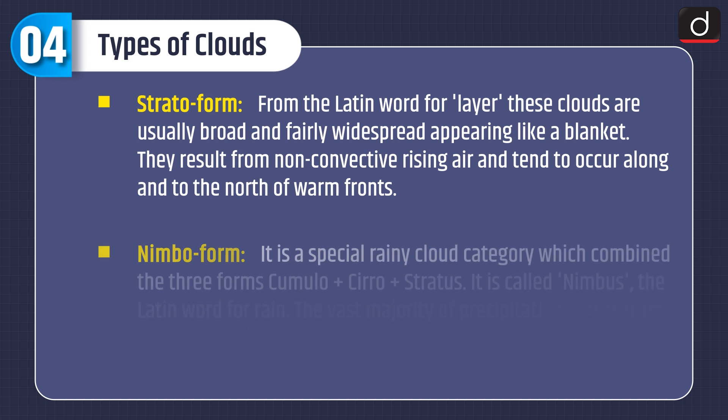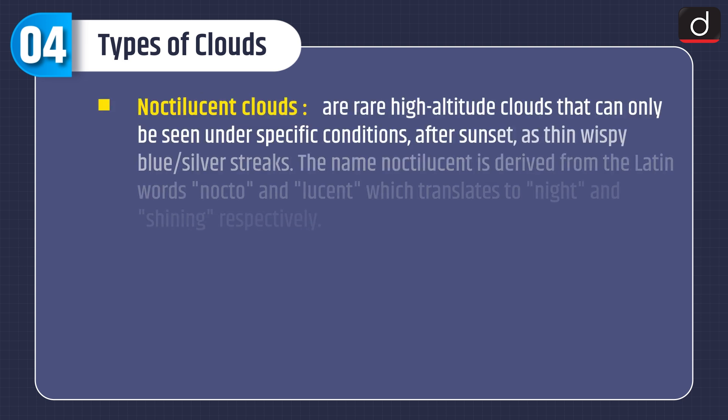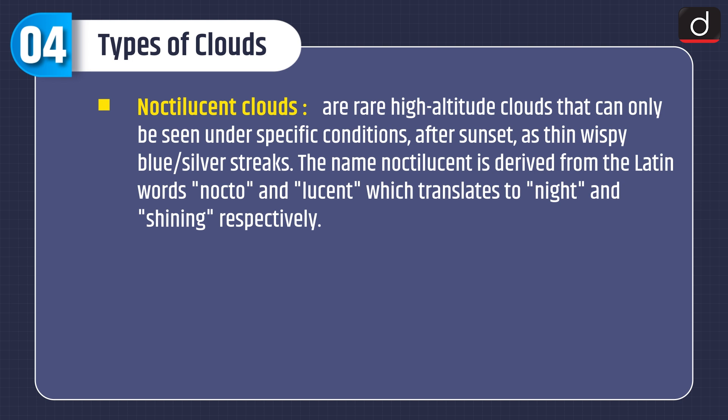Stratoform: from the Latin word for layer, these clouds are usually broad and fairly widespread, appearing like a blanket; they result from non-convecting rising air and tend to occur along and to the north of warm fronts. Nimboform is a special rainy cloud category combining the three forms — cumulo, kyro, and stratus — called nimbus, the Latin word for rain; the vast majority of precipitation occurs from nimboform clouds. Noctilucent clouds are rare high-altitude clouds seen only after sunset as thin, wispy blue or silver streaks; the name derives from the Latin words 'nocto' and 'lucent,' meaning night and shining respectively.